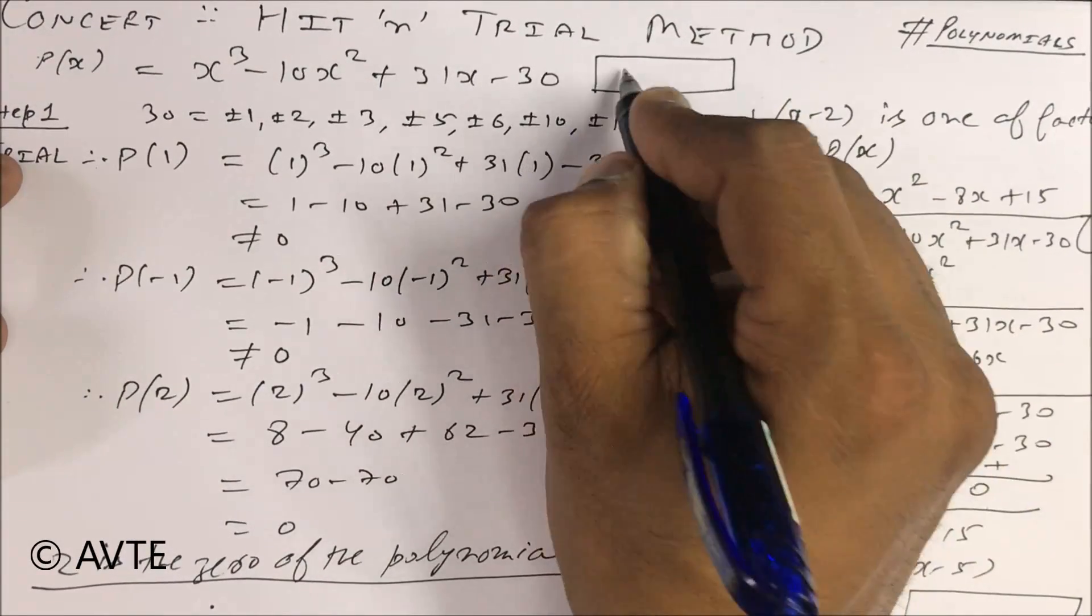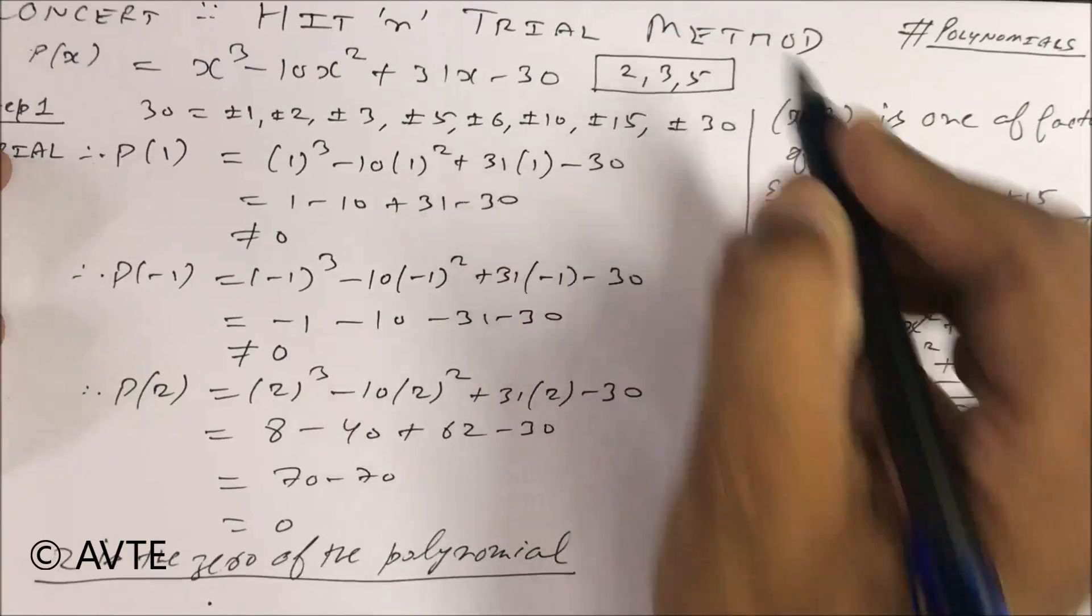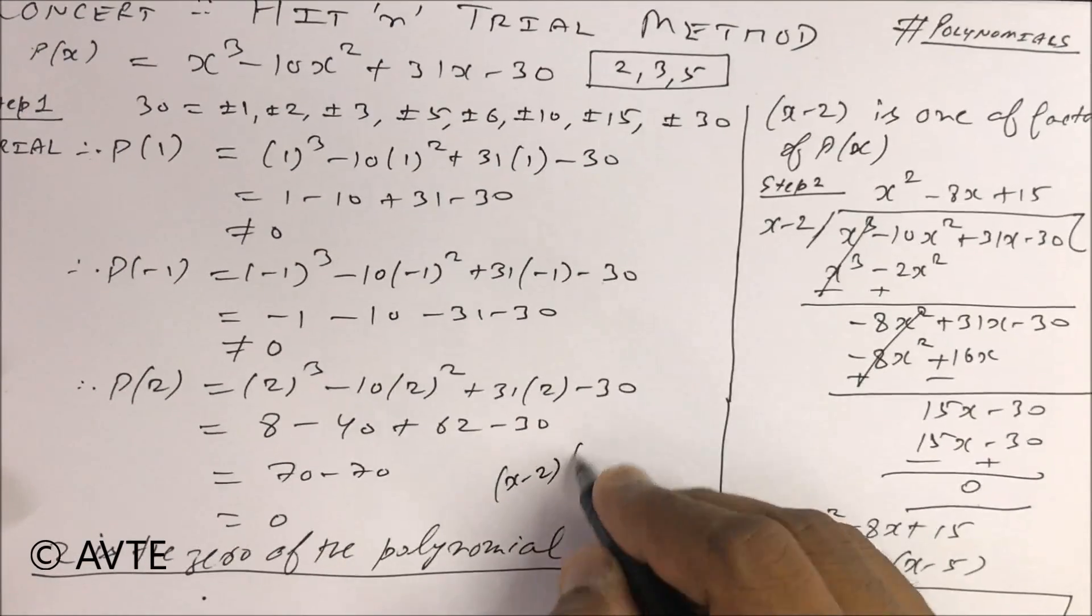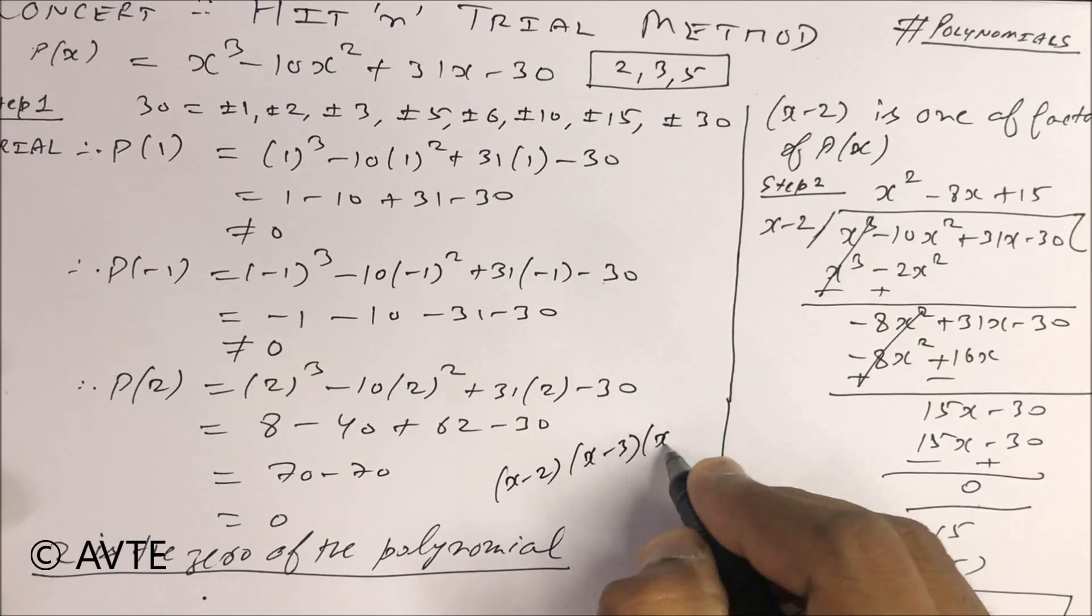So what are the zeros of this given polynomial? The zeros are 2, 3, and 5. And the factors are (x - 2), (x - 3), and (x - 5).